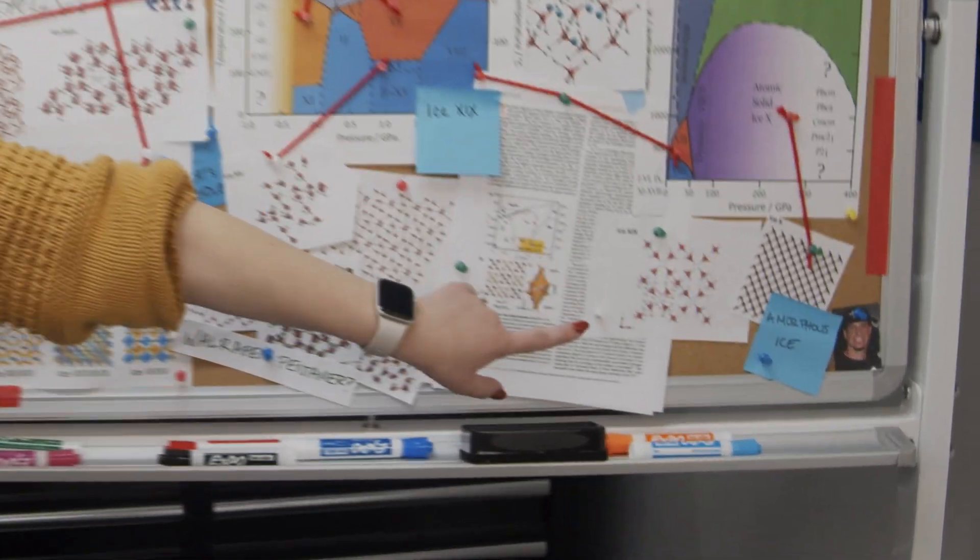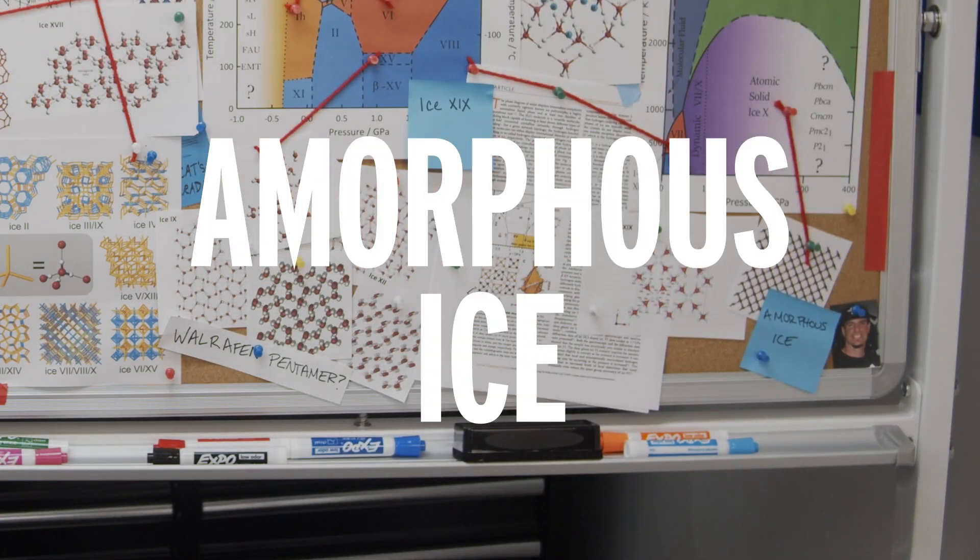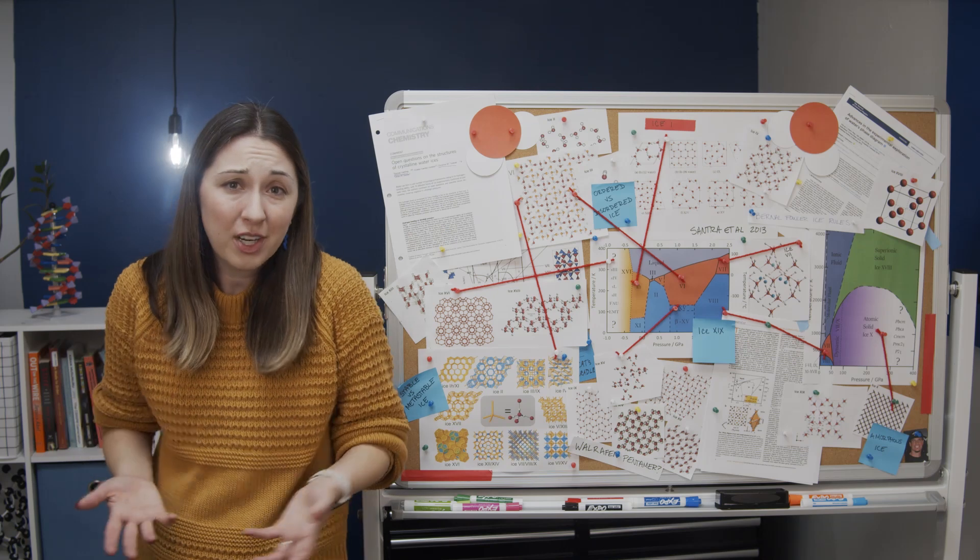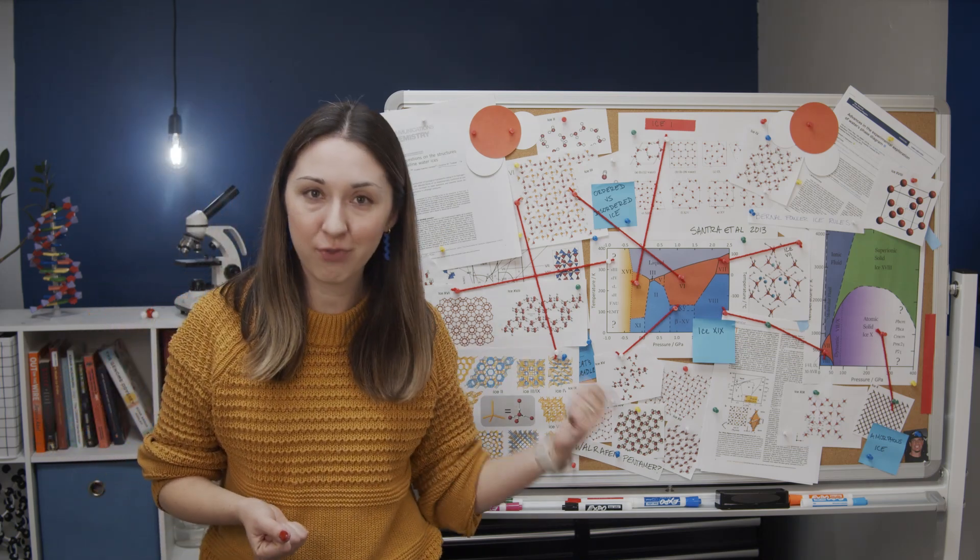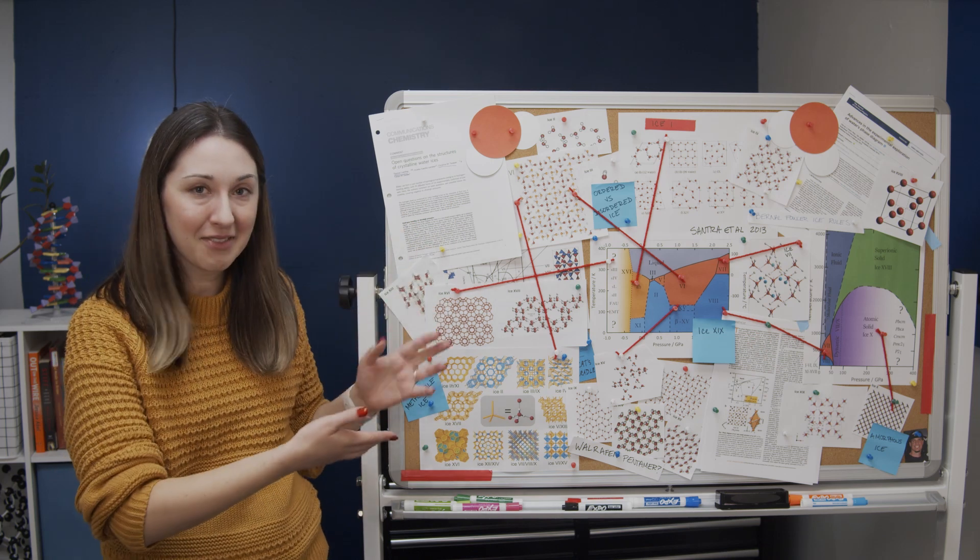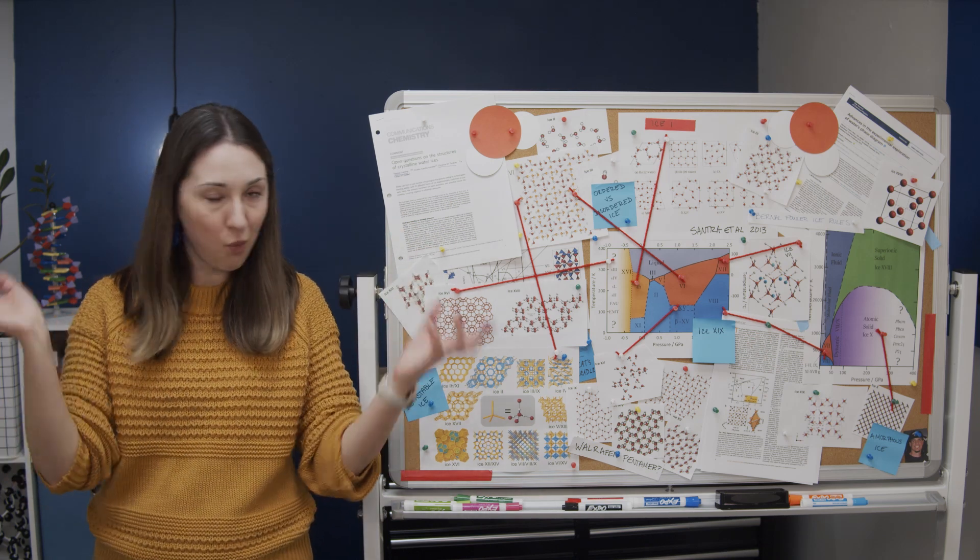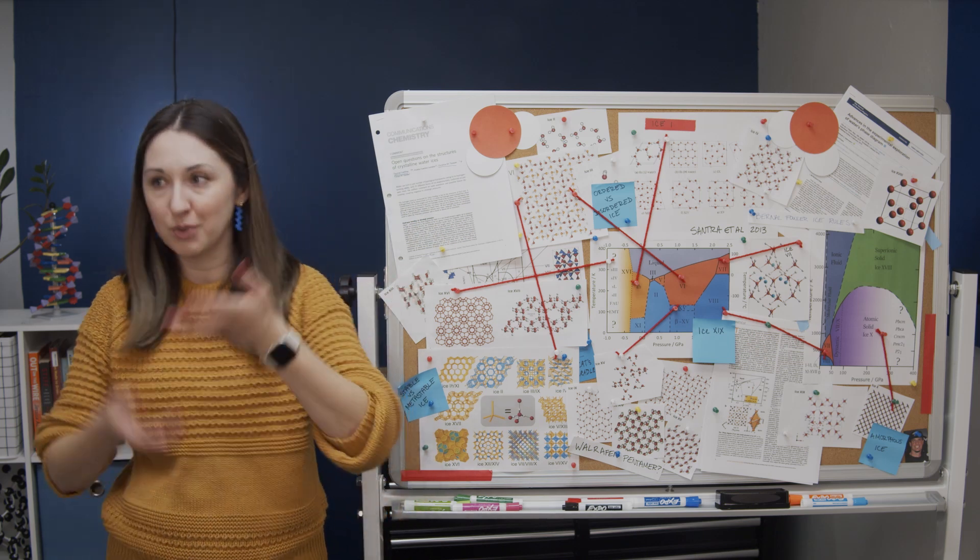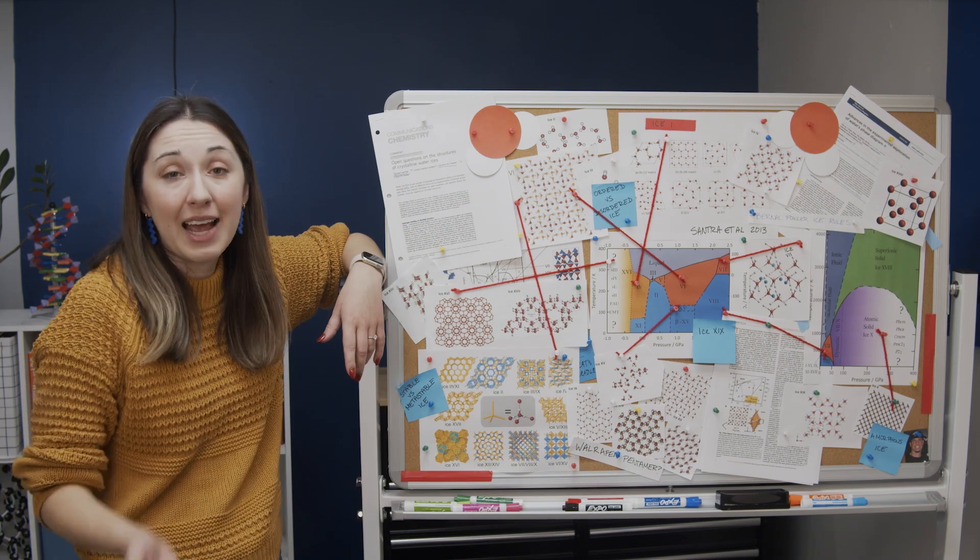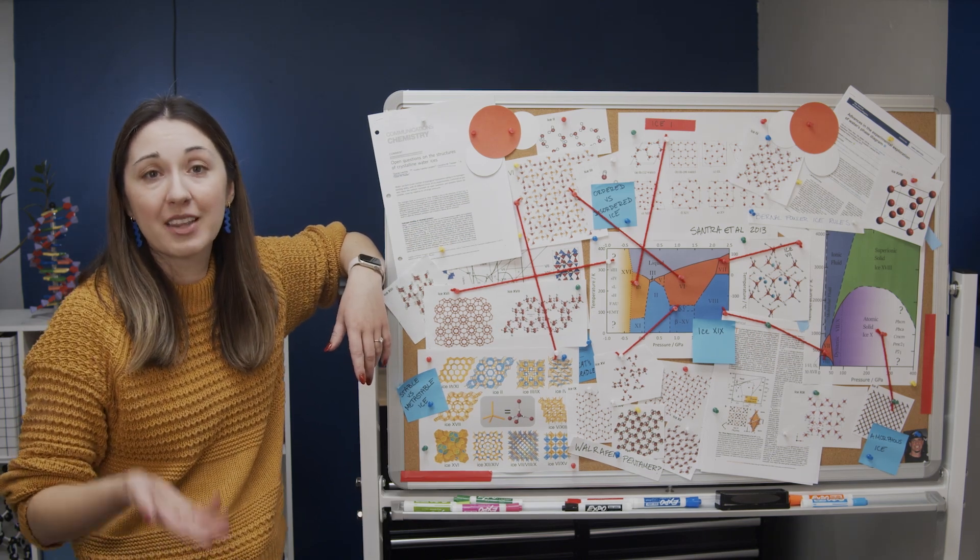But there's also amorphous ice. Amorphous ice doesn't have a long-range order to its structure, often because it has been cooled so quickly that there just wasn't time for a lattice structure to form. There's no nice order like any of these that goes on forever. It's just like water molecules randomly arranged, kind of like liquid water, which is why it's called amorphous ice.